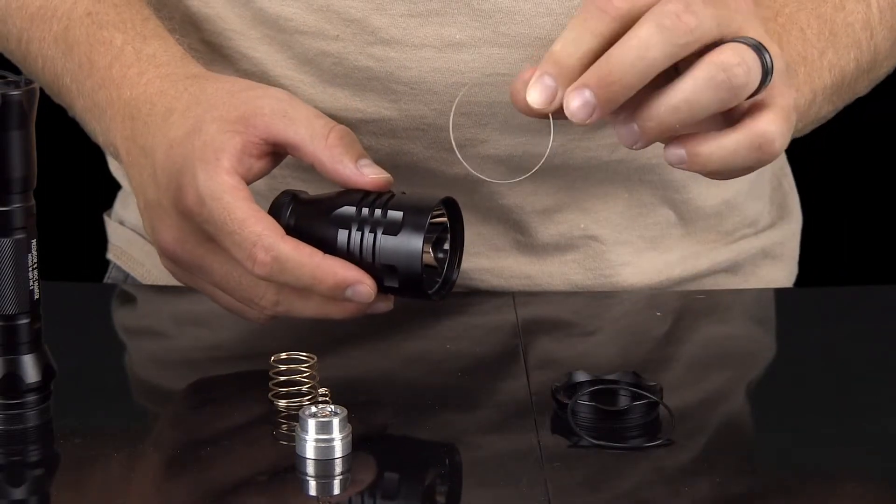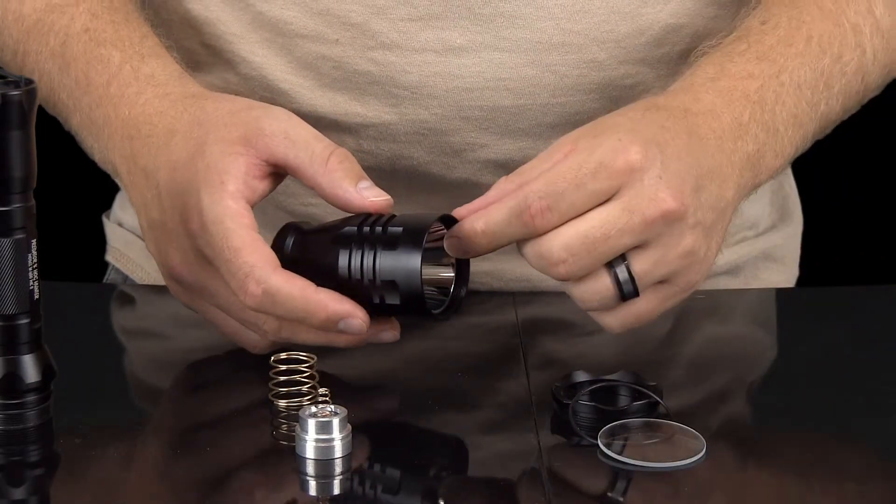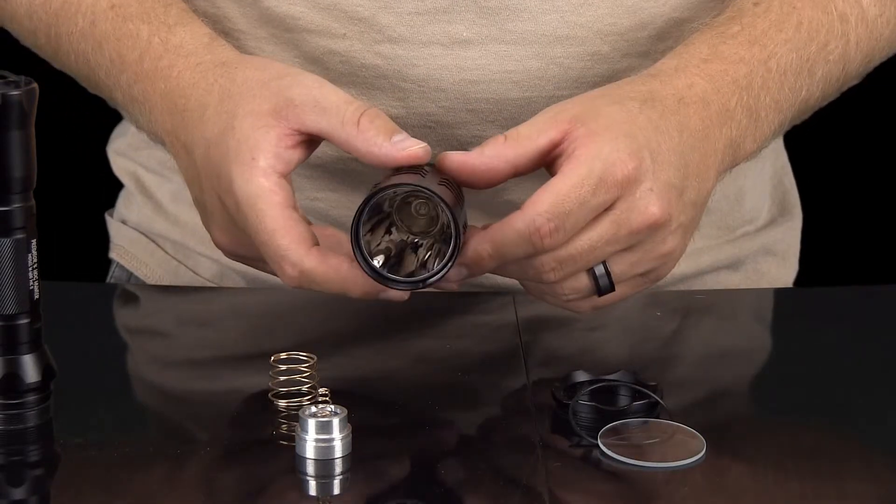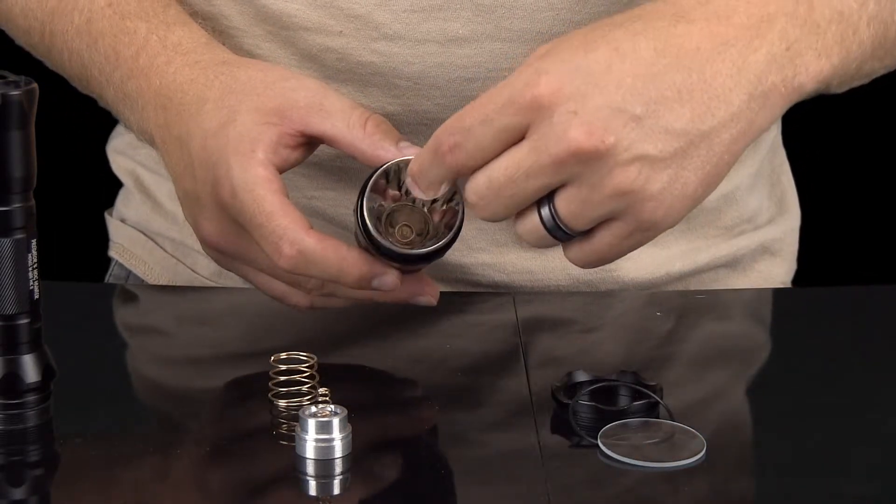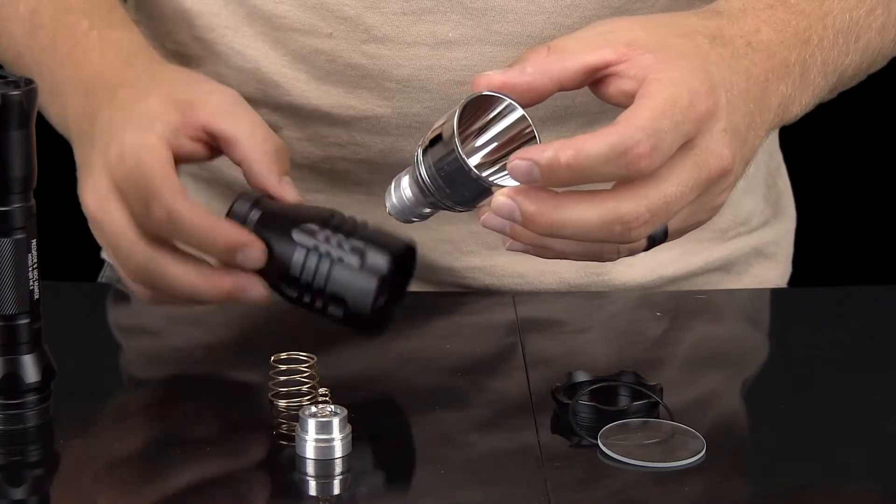Once the O-ring and glass lens are removed, you can pull out the entire reflective housing on the inside. When you pull it out, you will notice the LED is attached directly onto the reflective housing.